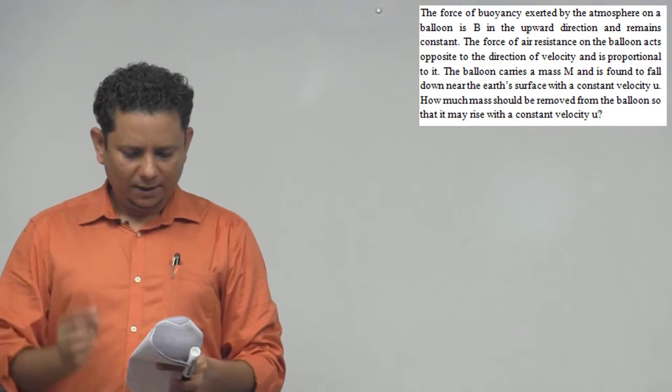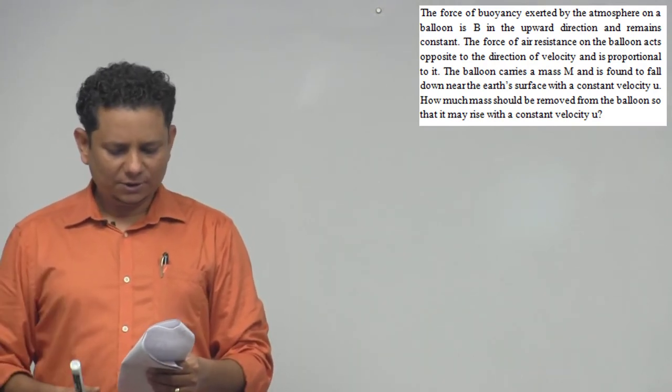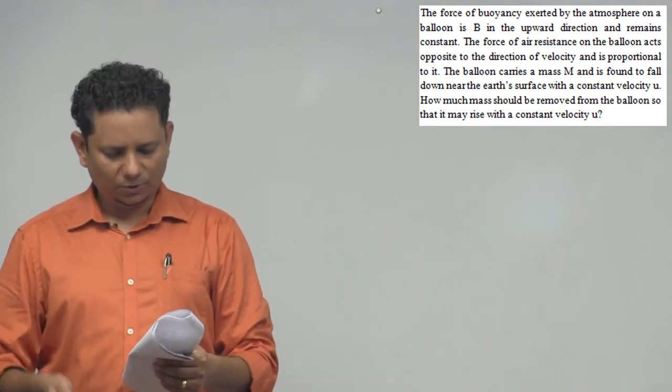Next question. The question says the force of buoyancy exerted by the atmosphere on a balloon is B in the upward direction and remains constant. The force of air resistance on the balloon acts opposite to the direction of velocity and is proportional to it.